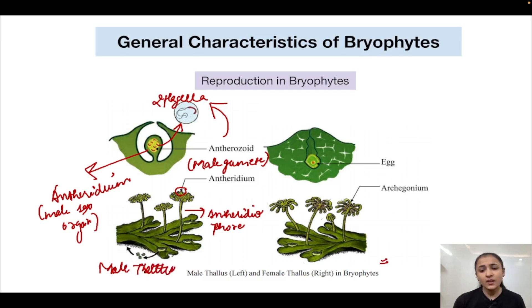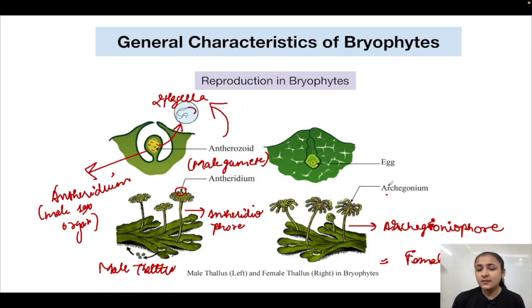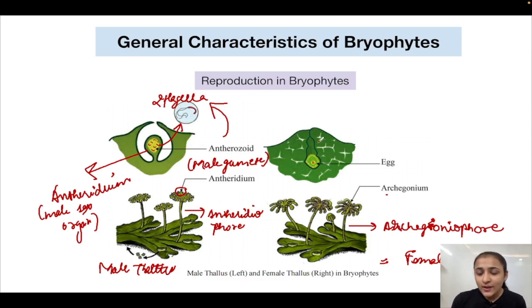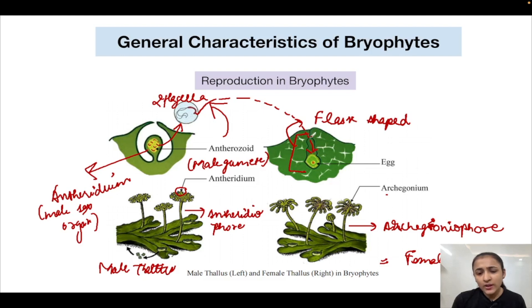The female thallus of Marchantia bears the archegoniophore, which is the female sex organ-bearing structure. It bears various archegonia (plural; singular: archegonium). The archegonium is flask-shaped in appearance and bears a single egg. The antherozoid will travel via water to the archegonia, enter it, and reach the egg to fuse with it in order to form a zygote.